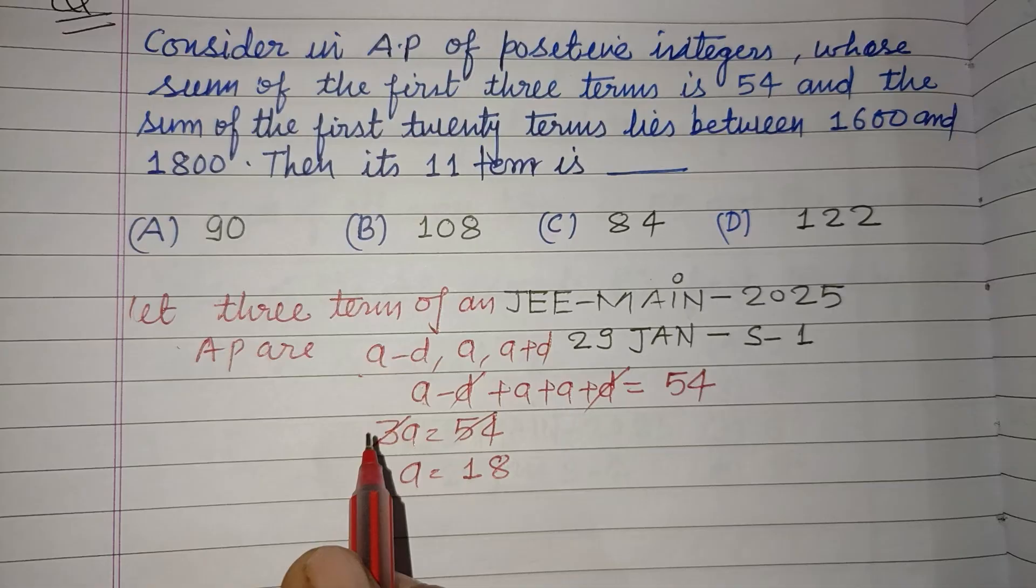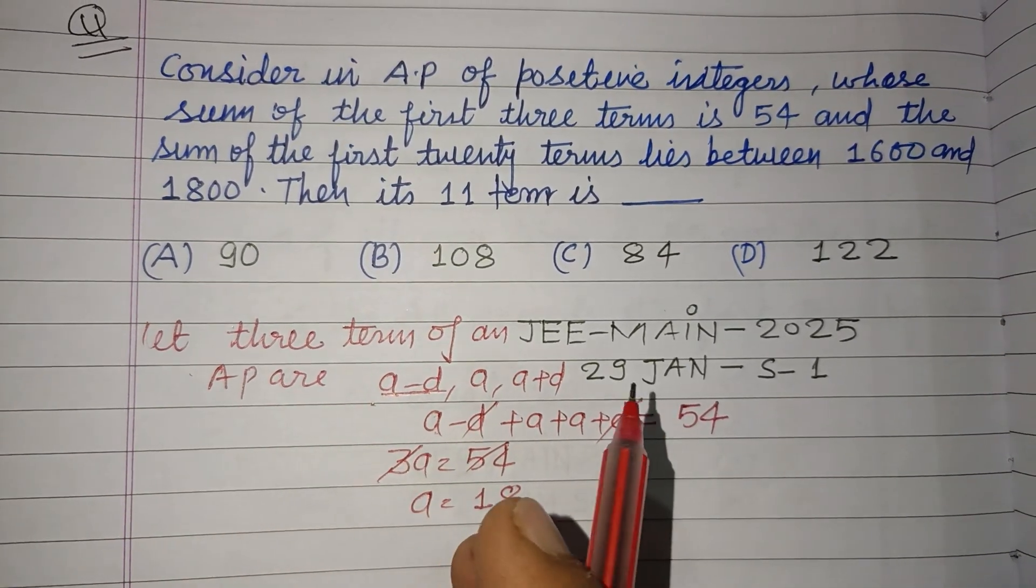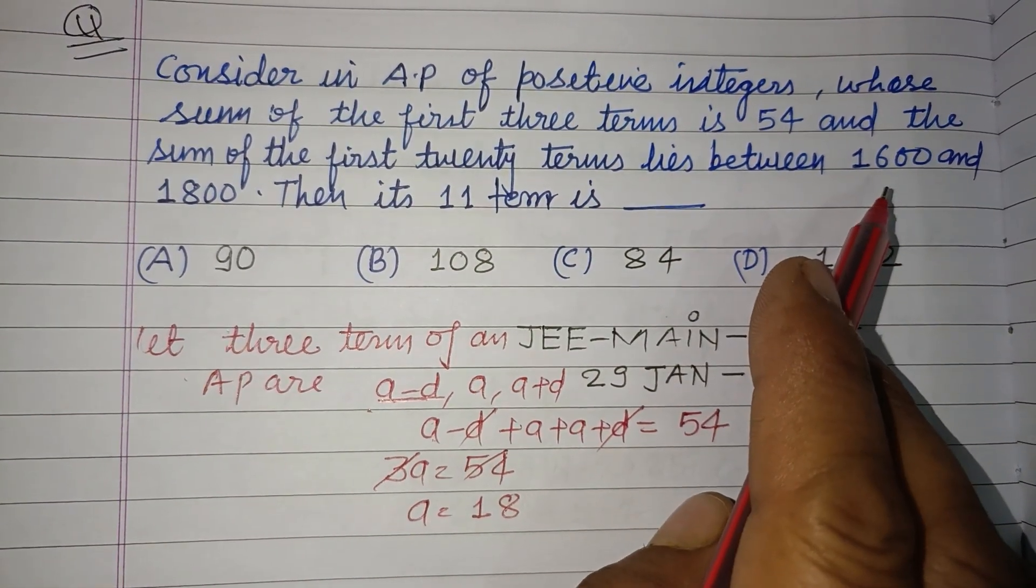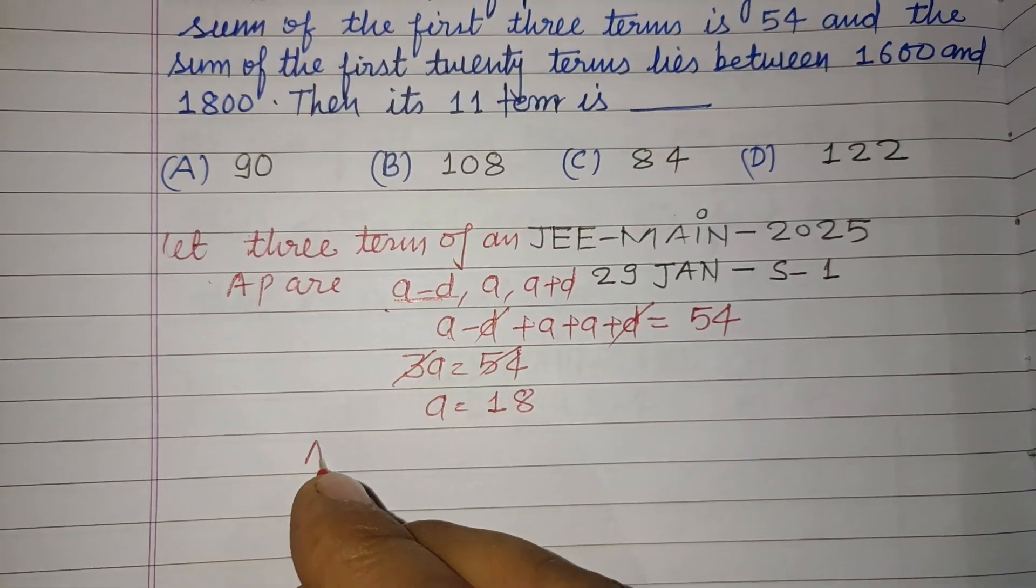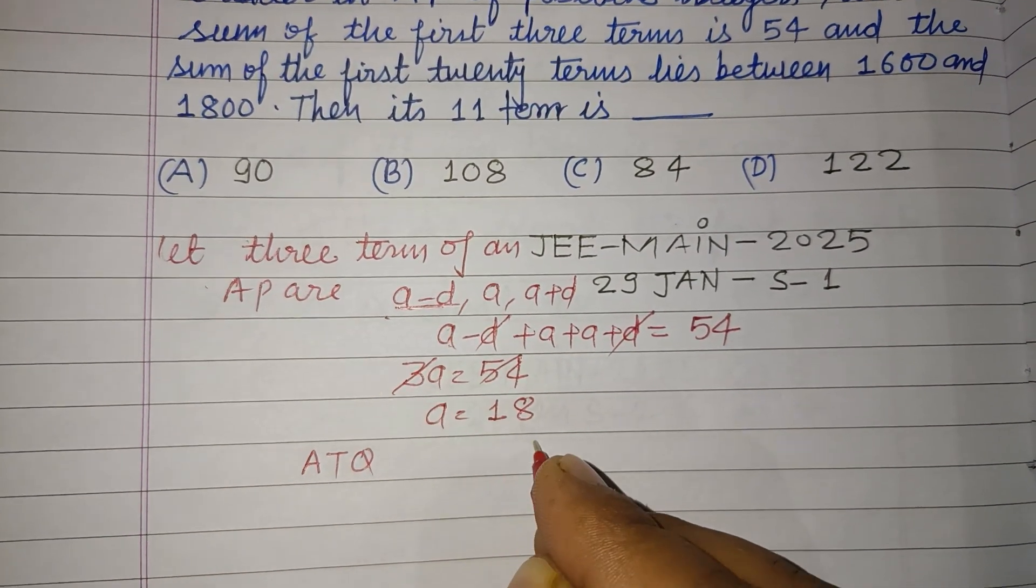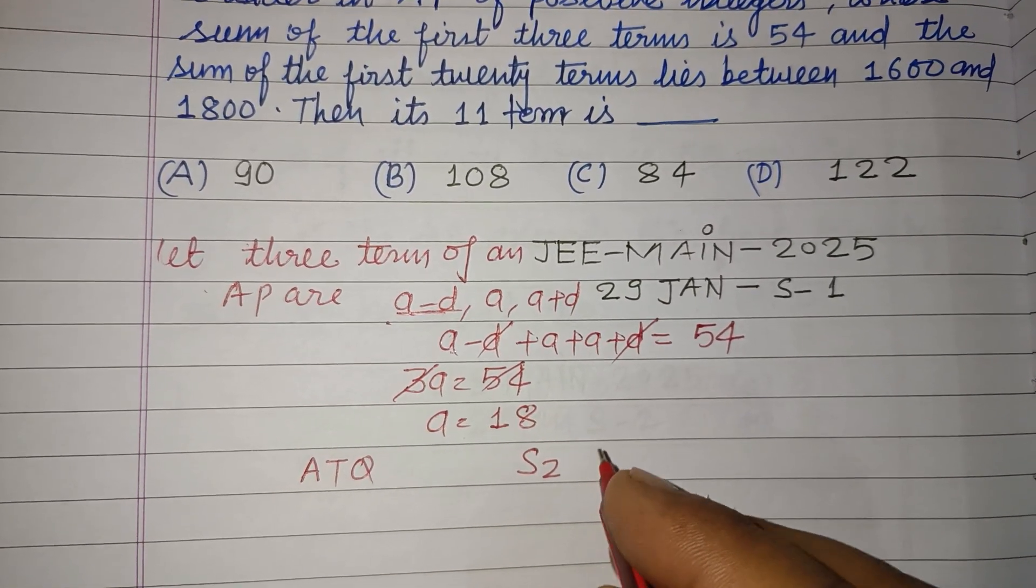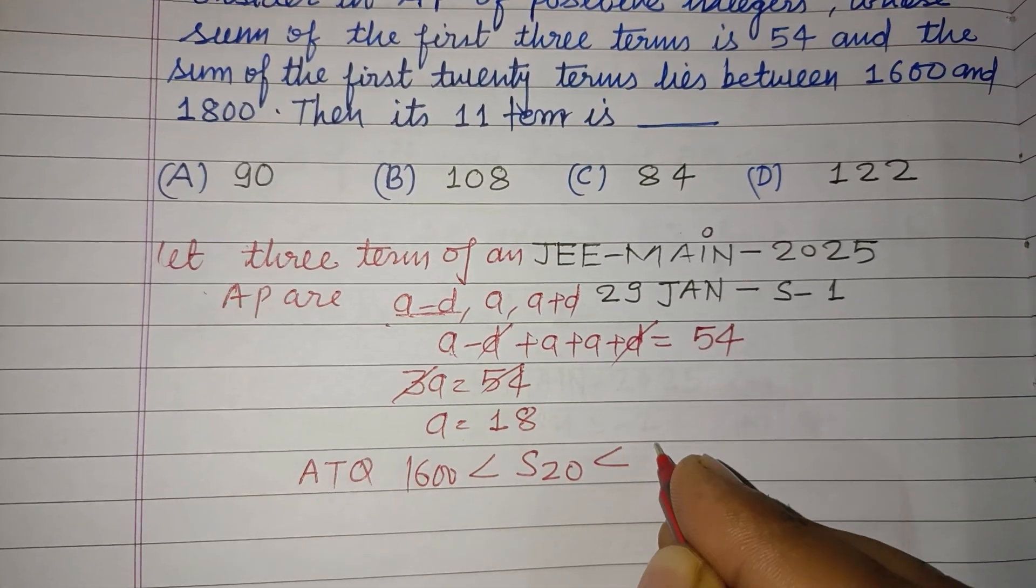So A is not first term because first term is A minus D. Now it is given the sum of the first 20 terms lies between 1600 and 1800. So according to question, sum of 20 terms S20 lies between 1600 to 1800.